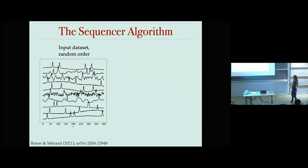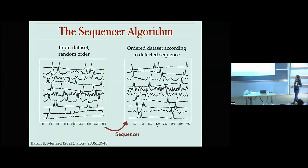To find sequences automatically, we developed an algorithm called the Sequencer. It takes an input data set — shown here as one-dimensional objects ordered randomly — and attempts to find a sequence in the data. If it finds one, it orders the objects according to that sequence. What you see here is a sequence revealed in these narrow lines in the shape of a W.